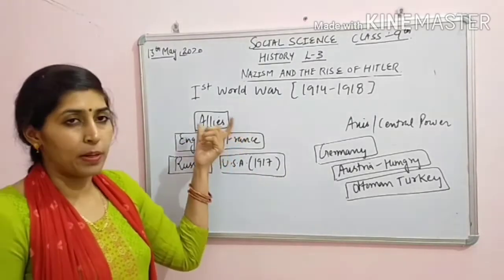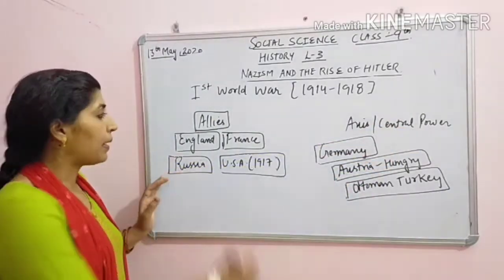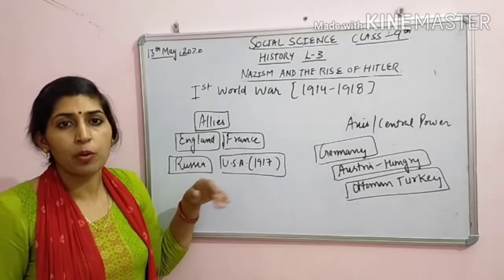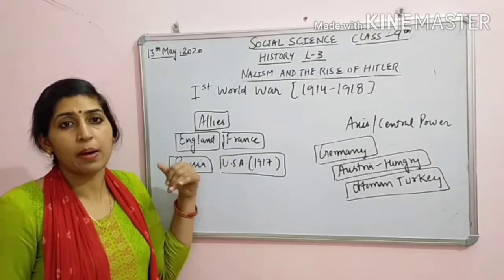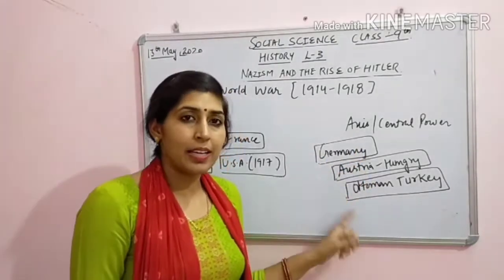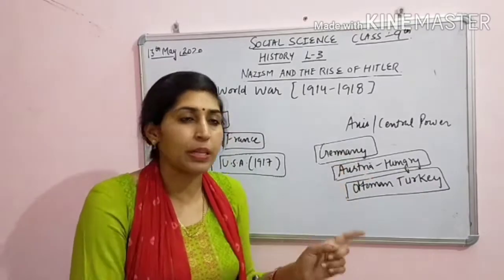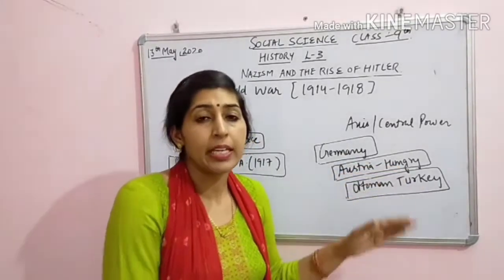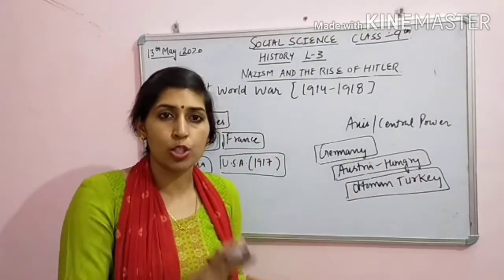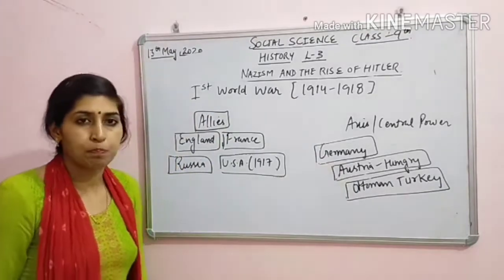Abhi same wahi group hai - Allied and Axis. Axis ko us time pe central power kaha jata tha kyunki yeh bohut zyada powerful thi. Yahaan par England, France, Russia, USA - yahaan par revolution aa gaya hai, republics ban gayi hain, democratic countries ban rahi hain, logon ko apne rights ke baare mein pata chal raha hai. Lekin yahaan par Germany mein - Austria, Hungary and Ottoman Turkey - yahan par abhi bhi king hai, aur usne empire banaya. Germany mein Kaiser Wilhelm the - usne empire bana liya.